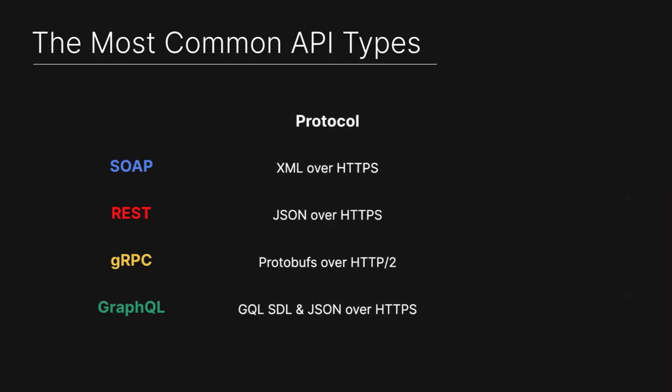So as we look at the differences of these, SOAP is XML over HTTPS. When we talk about REST, it's JSON over HTTPS. That's one of the things that makes REST APIs really easy to work with — it's very simple.